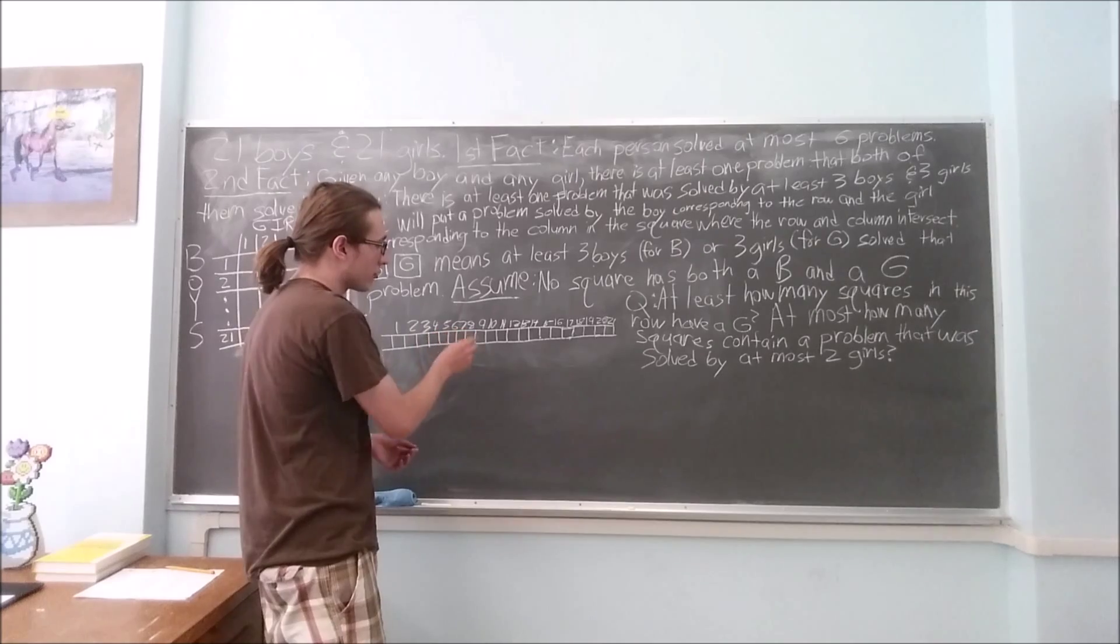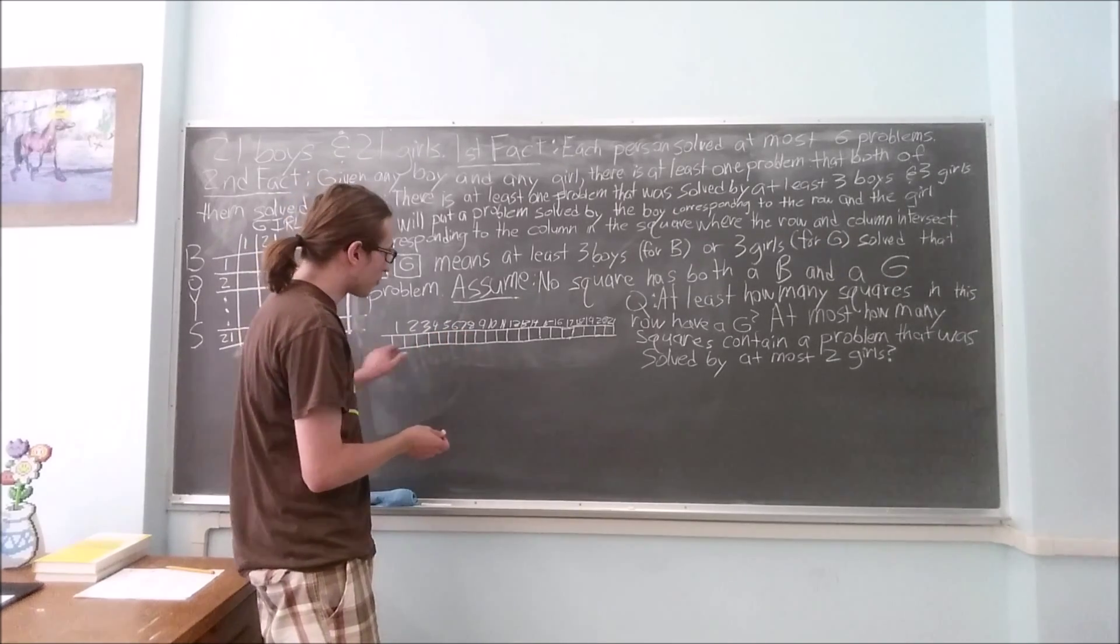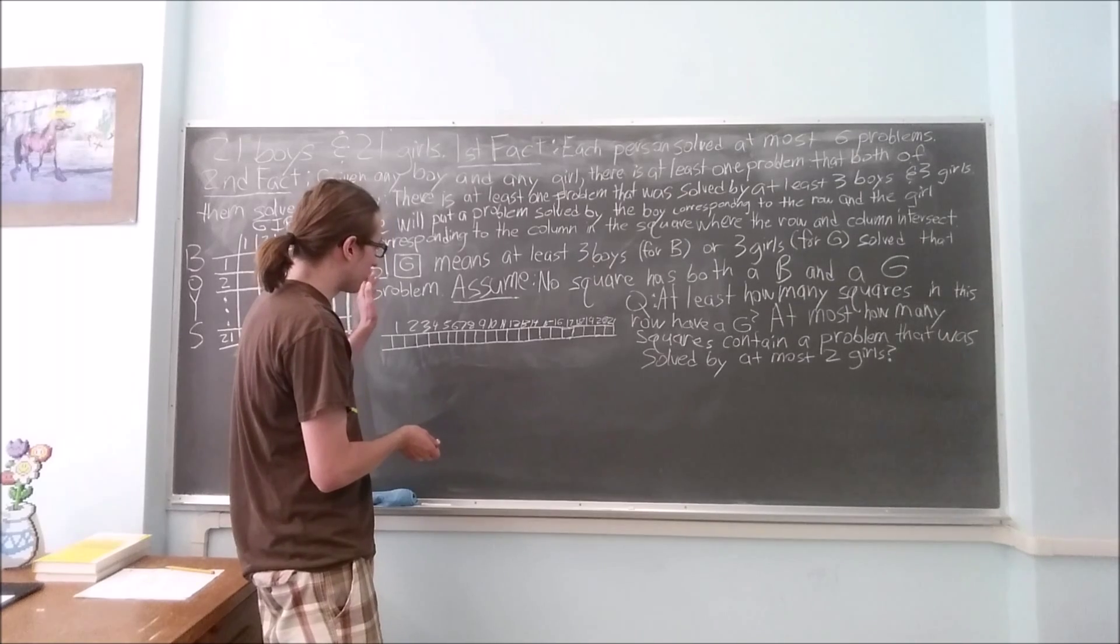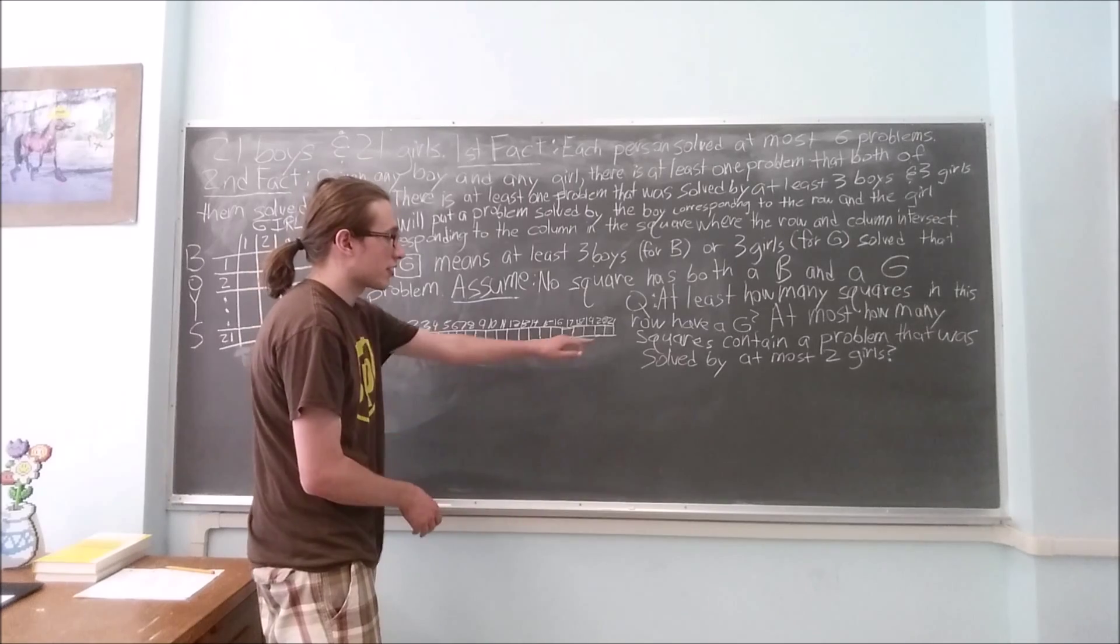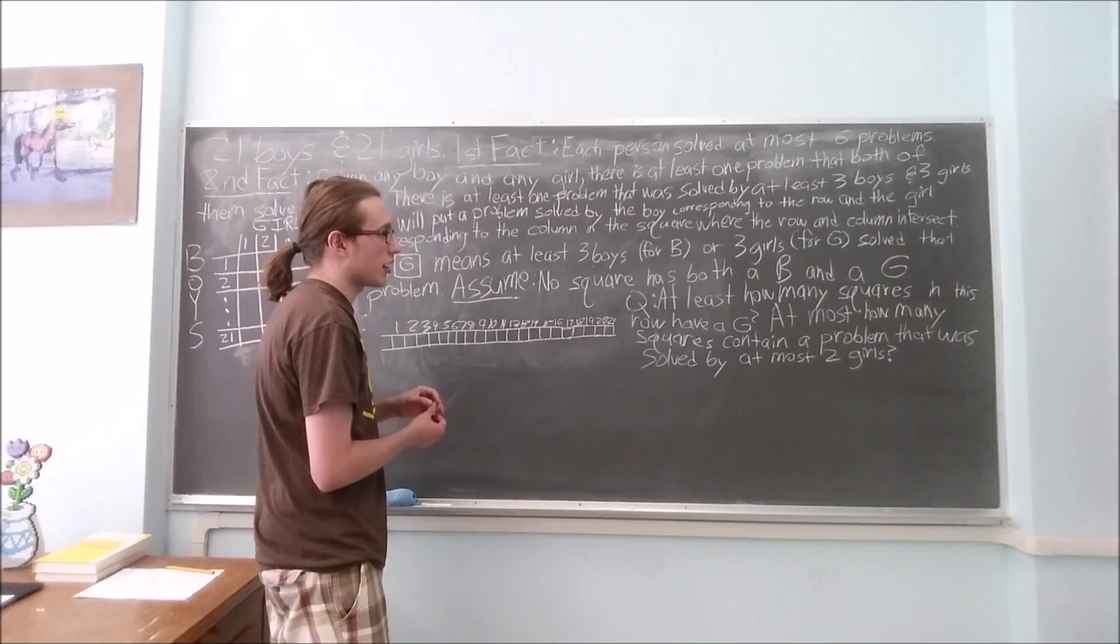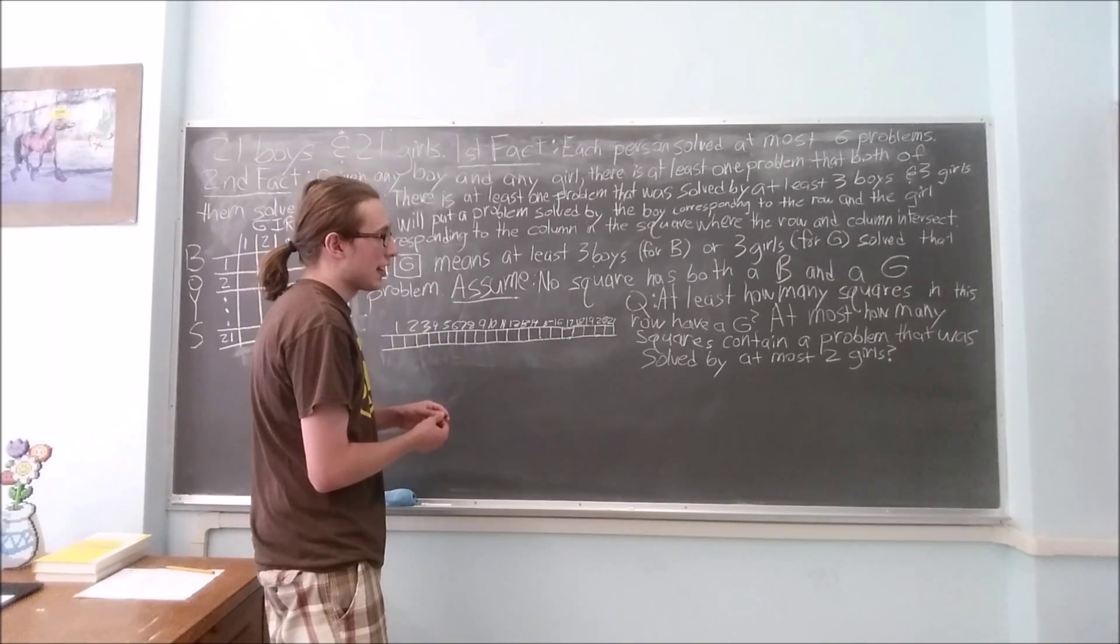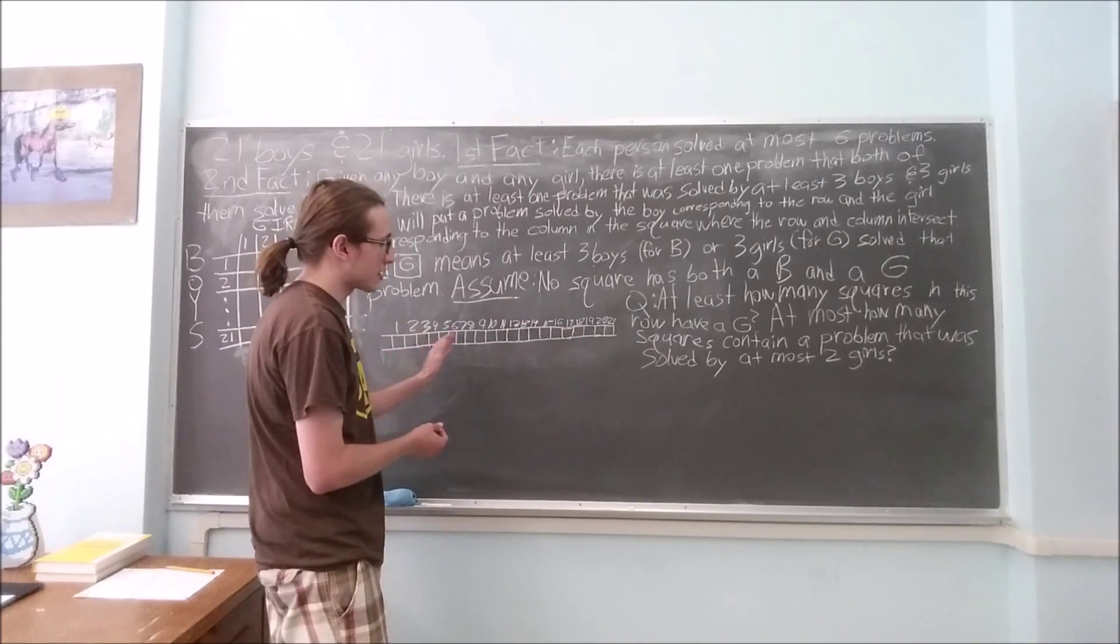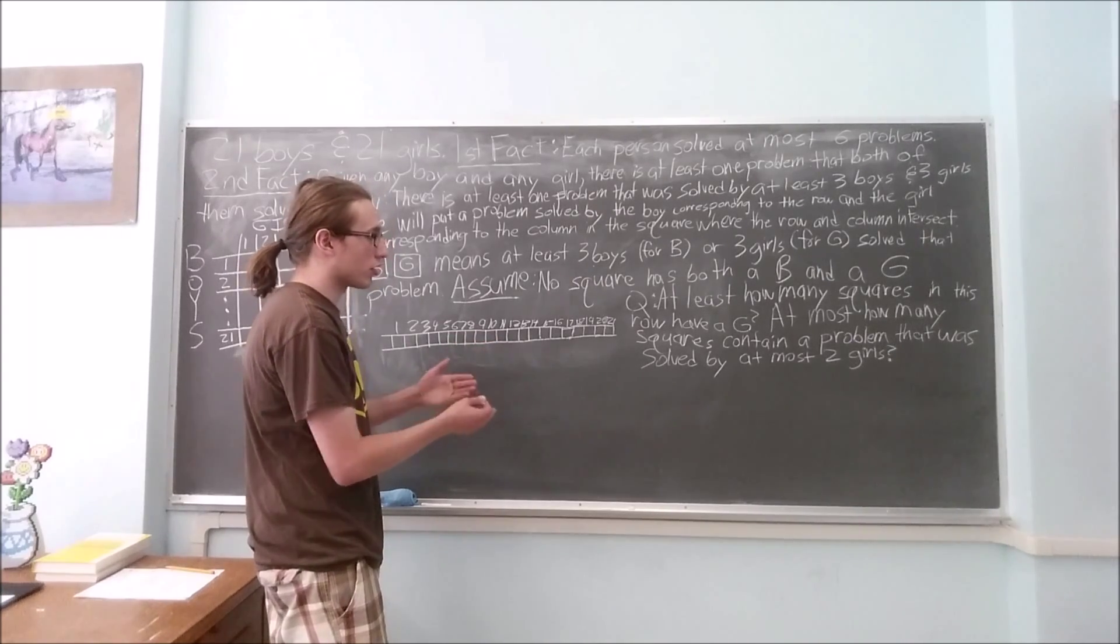In each of these squares, a letter corresponding to the problem that this boy solved and the girl in that column also solved. Now I want to get, in order to answer the second question, which is related to the first question, I want to have as few repeats as possible. So that way I can maximize the number of problems that were solved by at most two girls.